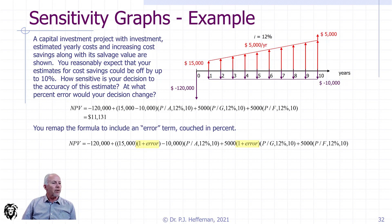Really all we have to do is we have to substitute in different values of percentage errors, say negative 10%, negative 5%, plus 5%, plus 10% and recalculate and build ourselves a table of how net present value will change for errors in our estimate of cost savings.